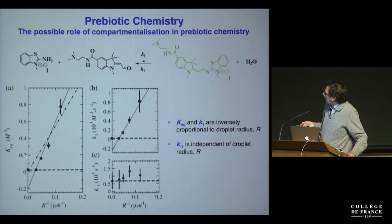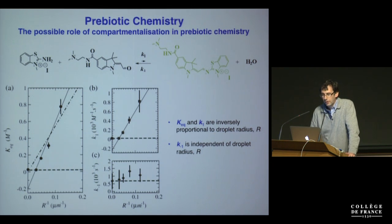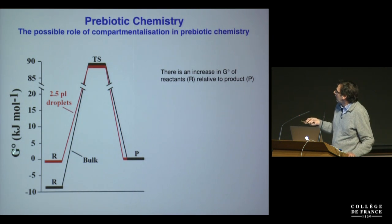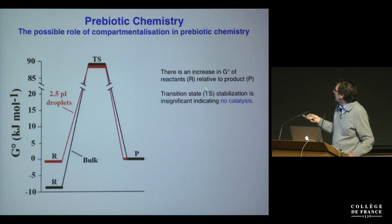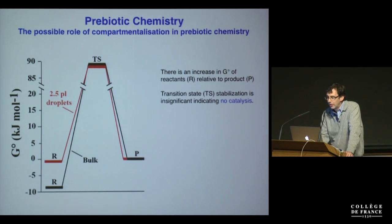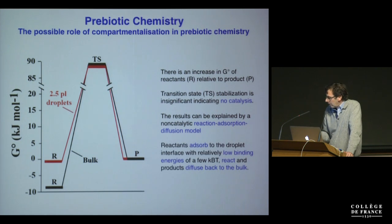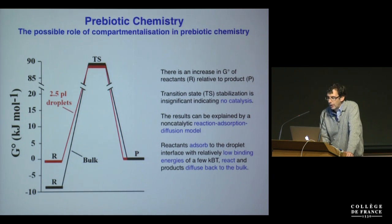Looking at this in more detail, the equilibrium constant and the forward rate constant K1 are inversely proportional to the radius of the droplet, whereas the reverse rate constant K-minus-1 is independent of the droplet radius. Converting this into free energies, there is an increase in the free energy of the reactants relative to the product. The free energy of the transition state doesn't change, indicating transition state stabilization is insignificant — it's not a catalytic mechanism. Instead, the results can be explained by a non-catalytic reaction-adsorption-diffusion model, where reactants adsorb to the droplet interface with relatively low binding energy of just a few k_BT, react at the interface, and then the products diffuse back to bulk.